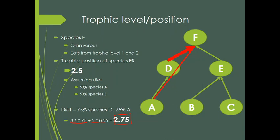I should define here that looking at trophic level one, trophic level two, and trophic level three is looking at trophic levels, whereas trophic position is more of an integrative number based on the diet composition of what a species is eating.